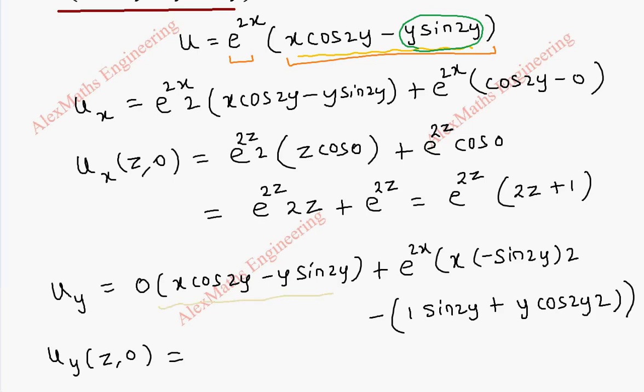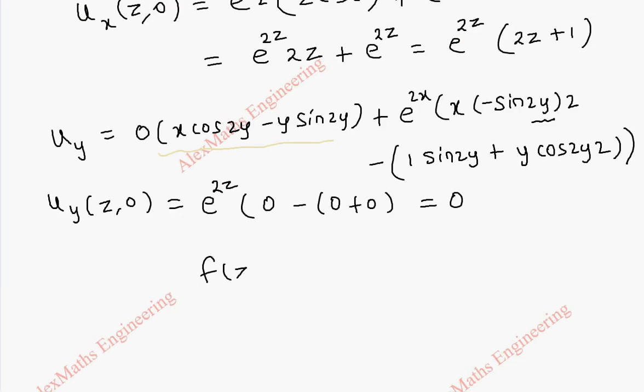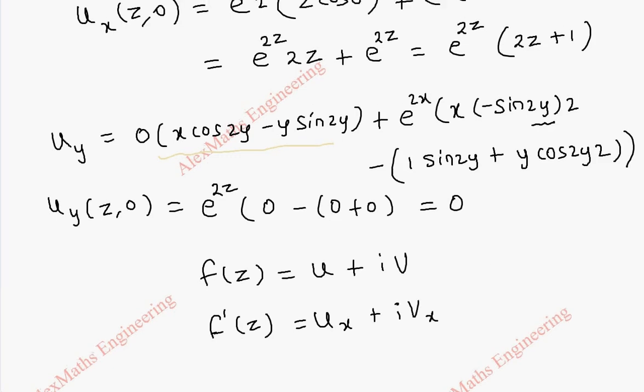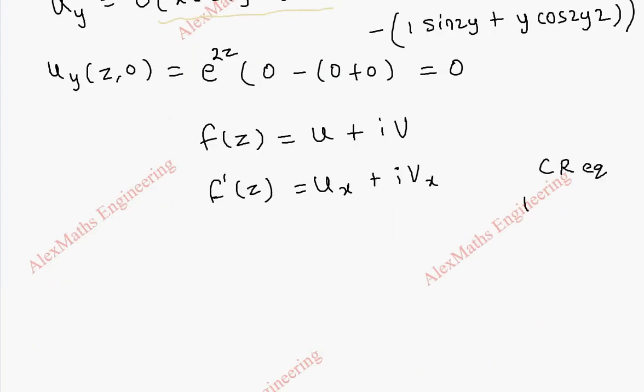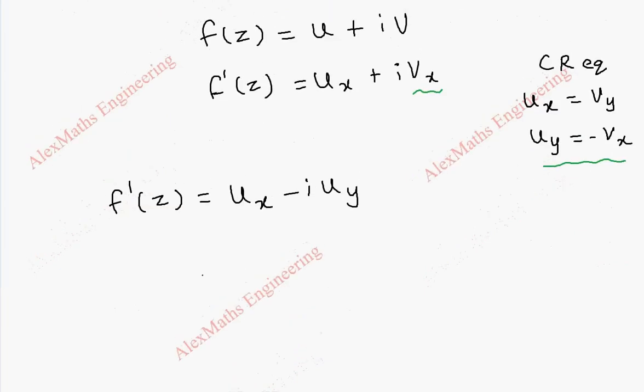Anyway the first term is fully 0 and coming to this when I substitute y here is 0 this term is 0 so we have e power 2z into first term is 0 and second term is also 0 and third term y is there so it is 0. So totally u_y of z comma 0 is 0 so f of z which is u plus iv and f dash of z which is u_x plus iv_x. And using CR equations we have u_x as v_y and u_y as minus v_x. So this v_x can be replaced as minus u_y from this.